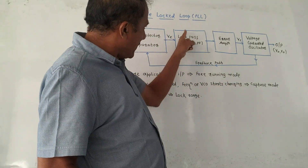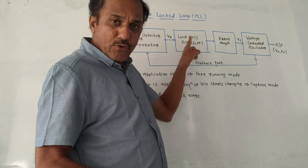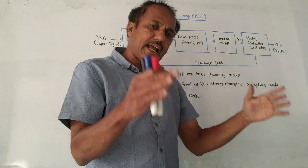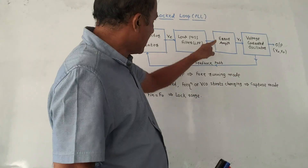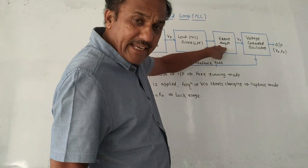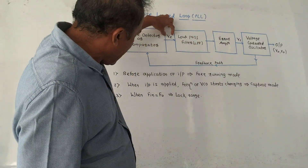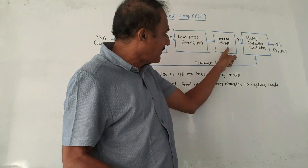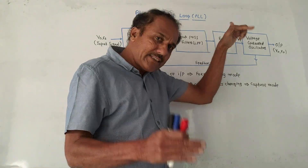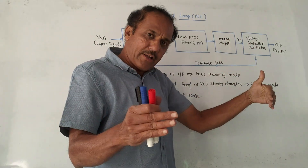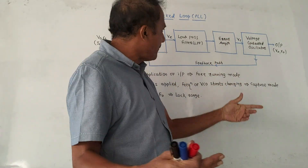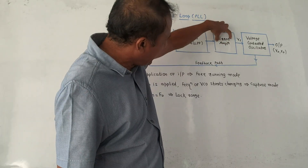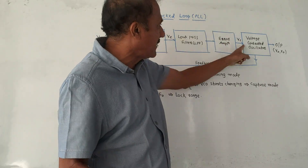This output is given to the LPF, low pass filter. As the name indicates, it passes lower frequencies and blocks higher frequencies. Next is the error amplifier. This error voltage, after passing through the low pass filter, is given to the error amplifier — an amplifier designed using an operational amplifier. Its output is denoted by VC, and it amplifies the error signal.